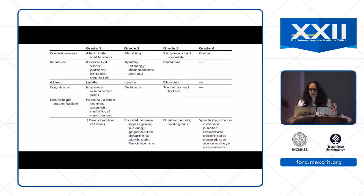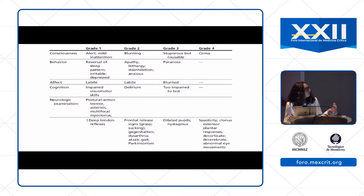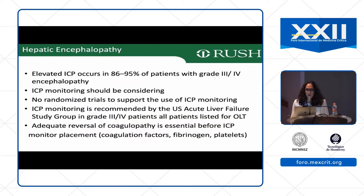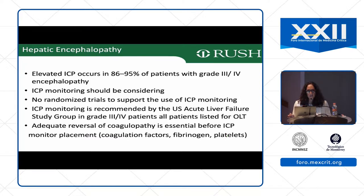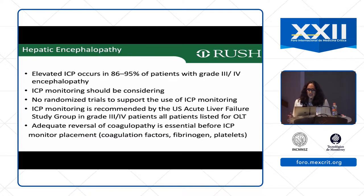There is a grading system for hepatic encephalopathy. In grades 3 and 4, patients will be stuporous or comatose. These patients fare poorly because they can have elevated intracranial pressure in up to 95% of patients with grades 3 and 4 encephalopathy. ICP monitoring should be considered — though I know this is controversial and depends on where you practice. There are no randomized trials supporting ICP monitoring in these patients; however, the U.S. Acute Liver Failure Study Group does recommend monitoring in grade 3 and 4 hepatic encephalopathy.